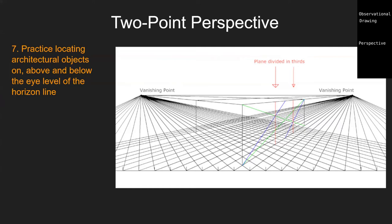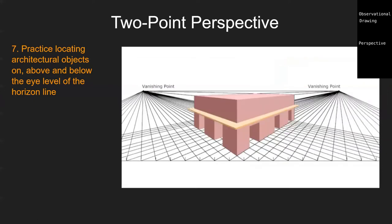Dividing into thirds is a bit tricky but once you practice it you'll get the hang of it. This is connected to things like third-based geometry, golden sections, and golden ratios — a lot of that comes from dividing shapes using their diagonals. It's essentially geometry before calculus.